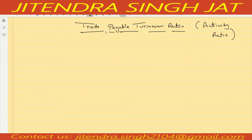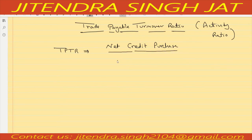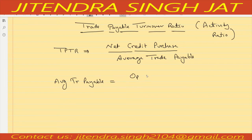Trade payable means creditors and bills payable. The formula of trade payable turnover ratio is net credit purchase upon average trade payable. Net credit purchase means total purchase minus cash purchase equals credit purchase. Average trade payable is calculated the same way as average trade receivables.